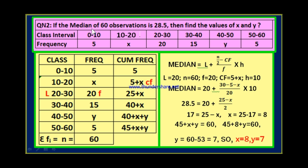The median of 60 observations is 28.5. Therefore, 28.5 = 20 + (30 − 5 − x) / 20 × 10, which gives 28.5 = 20 + (25 − x) / 2. Bringing 20 to the other side: 8.5 = (25 − x) / 2. Multiplying both sides by 2: 17 = 25 − x. Therefore x = 25 − 17 = 8. So x value is equal to 8.